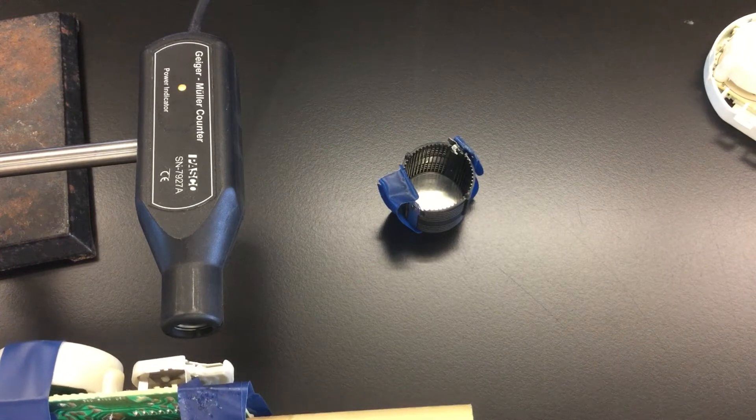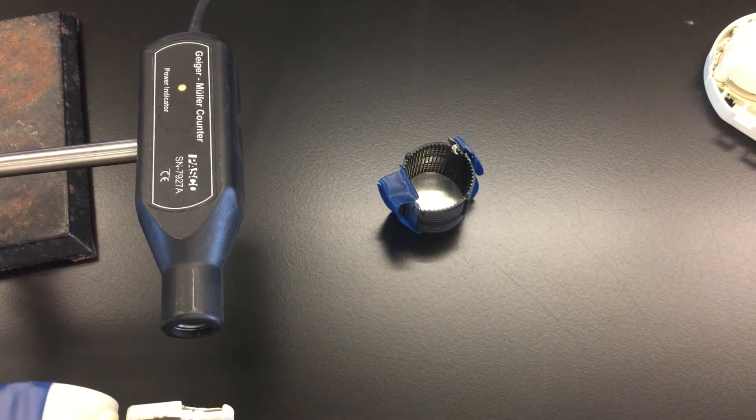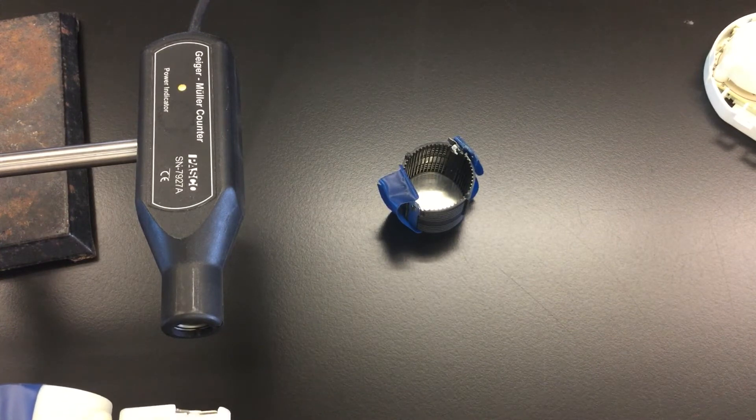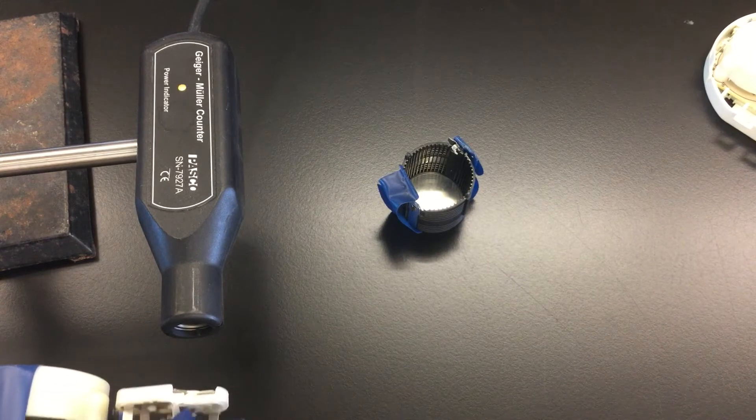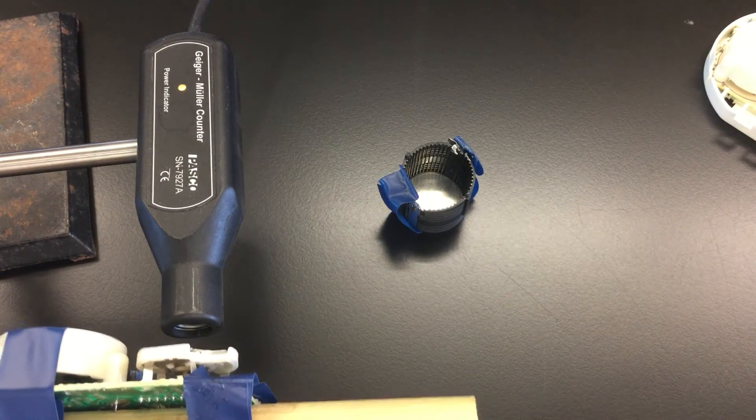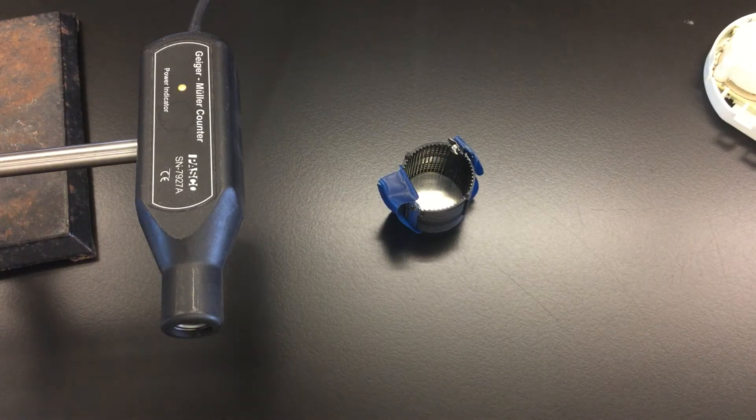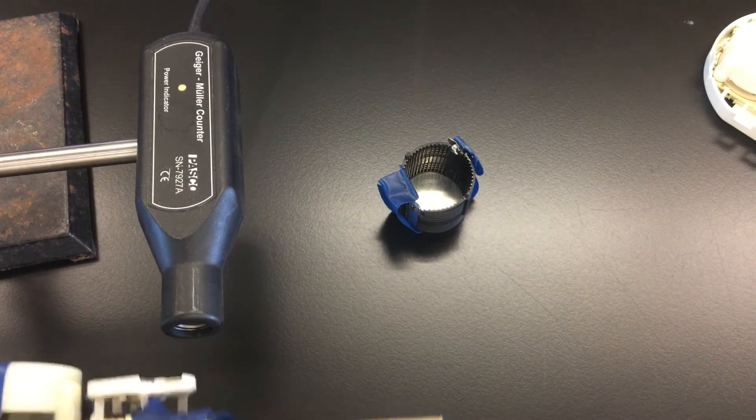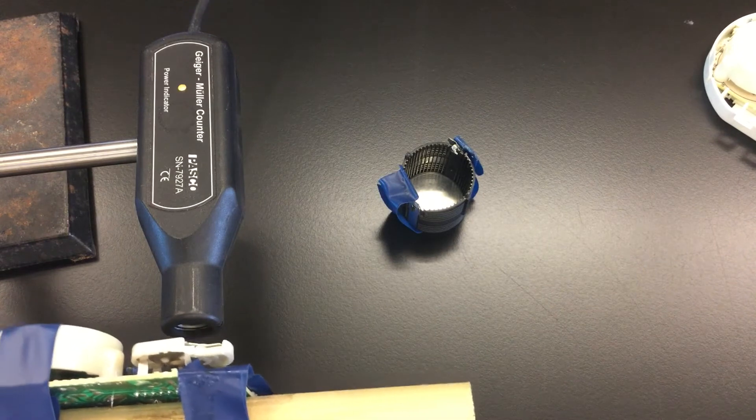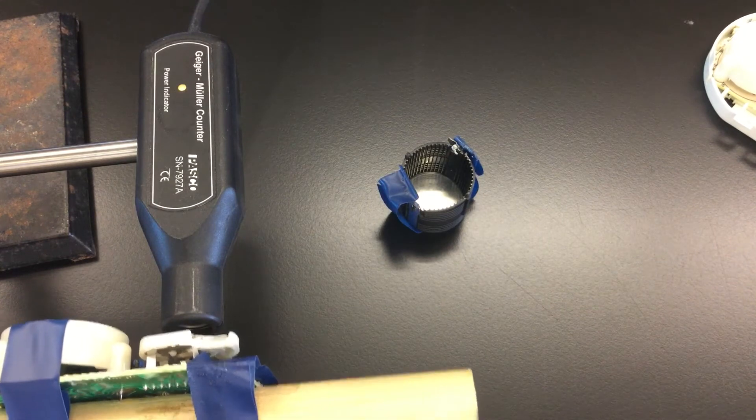Notice as I back away from the Geiger counter, there's a big drop in the number of counts. But if I come close again, you can see we're getting counts when we bring this alpha emitter near the front of the Geiger counter.